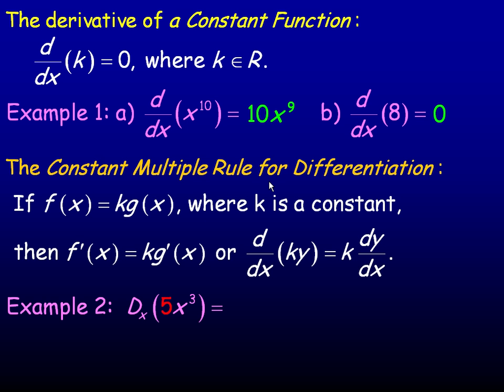The constant multiple rule for differentiation. Now the constant multiple rule for differentiation says that if a function f of x is equal to some constant, and k refers to a constant here, a constant times some other function, so g of x is some other function of x. Then to find the derivative, f prime of x would be just the constant multiplied by the derivative of g, the derivative of this function. In Leibniz notation, the derivative with respect to x of ky, so y is some function of x, is just k times the derivative of y with respect to x, dy dx.